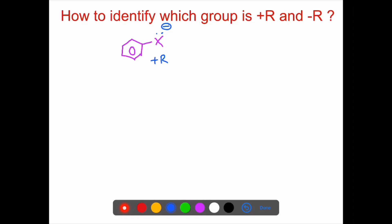This is benzene. When the first atom attached to benzene has atoms on a double bond, triple bond, or positive charge, that group is minus R. For plus R or minus R: if benzene's attached first atom has a lone pair or negative charge, it is plus R; if it has a double bond, triple bond, or positive charge, it is minus R.